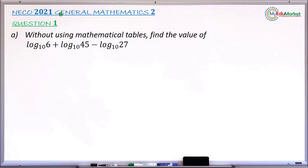This is NECO 2021 General Mathematics Paper 2 and we are answering question number 1a. The question reads: Without using mathematical tables, you are asked to find the value of log to base 10 of 6 plus log to base 10 of 45 minus log to base 10 of 27.